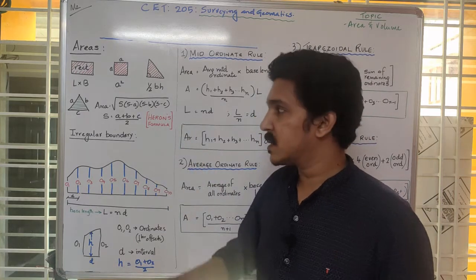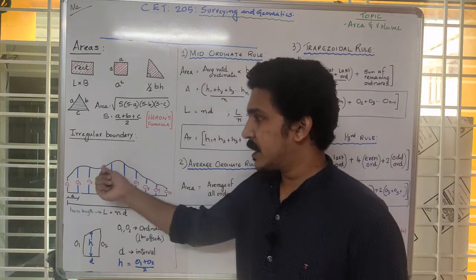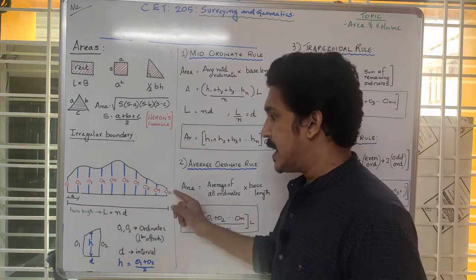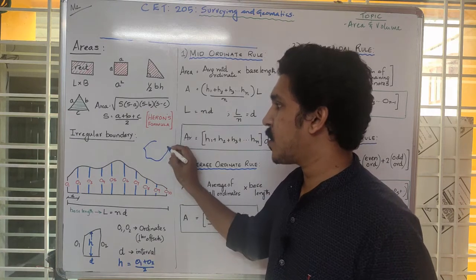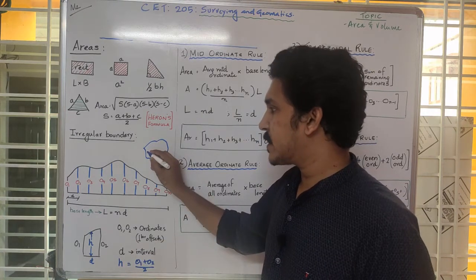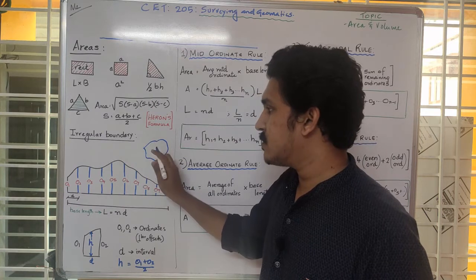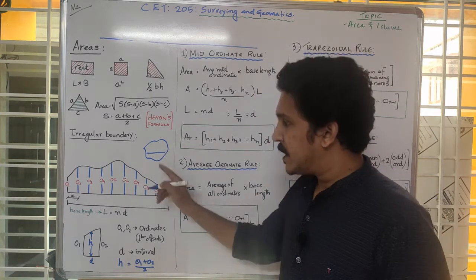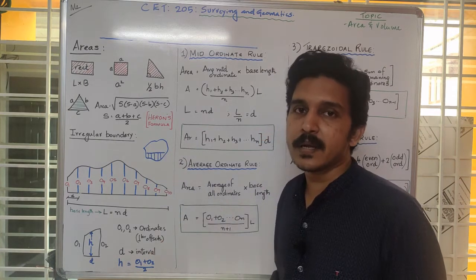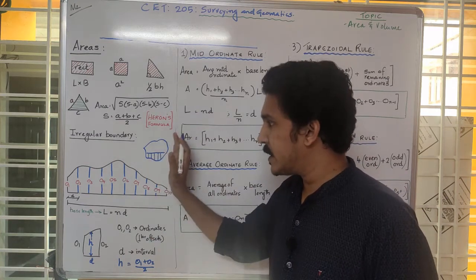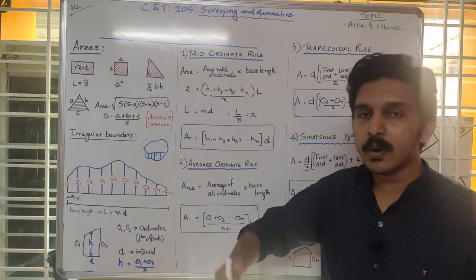But all these are for regular figures like triangles, rectangles, or squares. For an irregular boundary, we plot a straight line and mark offsets — regular, perpendicular offsets at equal intervals of 90 degrees. These perpendicular offsets help us deal with the irregular boundaries.